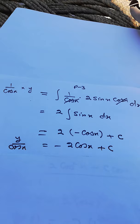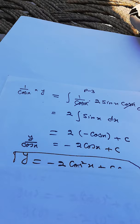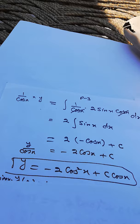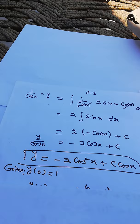The integral of sine x gives minus cos x, so y over cos x equals minus 2 cos x plus C. Multiplying both sides by cos x to solve for y, we get y equals minus 2 cos squared x plus C cos x.